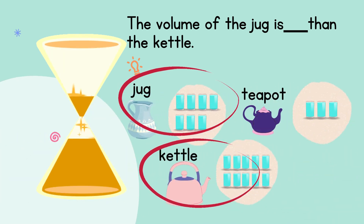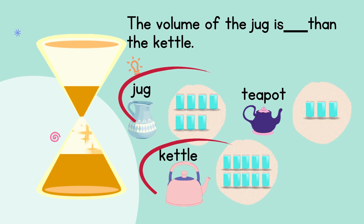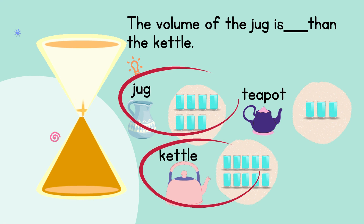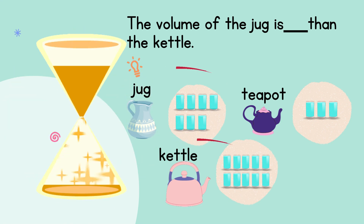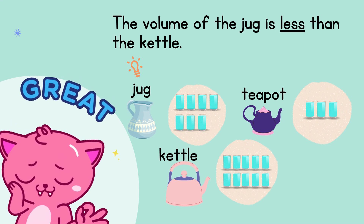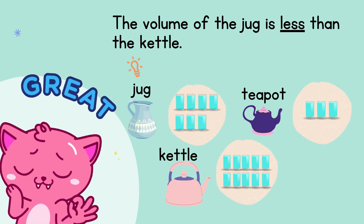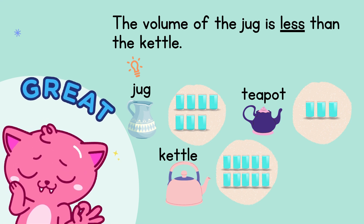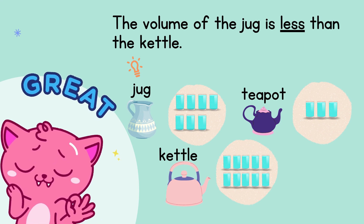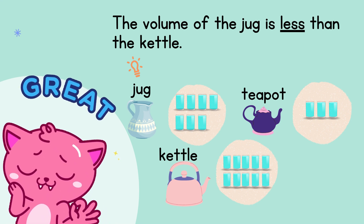Please focus on the jug and the kettle. Can you tell — is the volume of the jug more or less than the kettle? The answer is less. The volume of the jug is less than the kettle because the jug can only fill 7 glasses while the kettle can fill up to 10 glasses. So, the volume of the jug is less than the kettle.